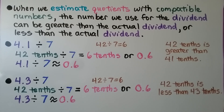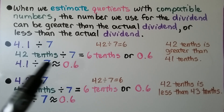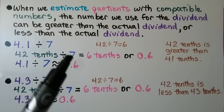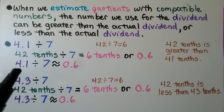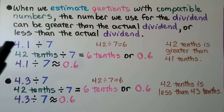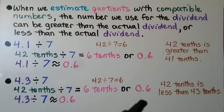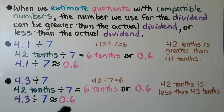When we estimate quotients with compatible numbers, the numbers we use for the dividend can be greater than or less than the actual dividend. For 4 and 1 tenths divided by 7, we think 42 divided by 7 equals 6, so 4 and 1 tenths divided by 7 is approximately 6 tenths. Since 42 tenths is greater than 41 tenths, this estimate is greater than the actual amount. For 4 and 3 tenths divided by 7, we could still use 42 tenths divided by 7, but since 42 tenths is less than 43 tenths, our estimate of 6 tenths will be less than the actual amount.